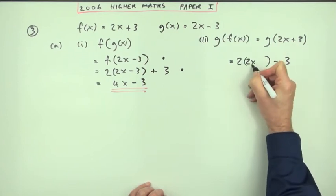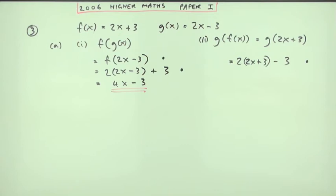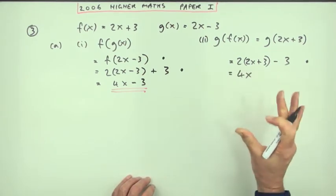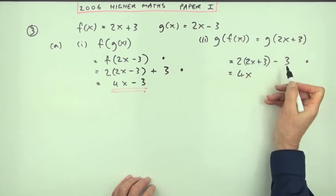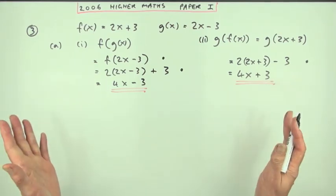And that's the third mark for part a. But again, hopefully you can't resist tidying that up—that's 4x plus 6 take away 3, so that's 4x plus 3.